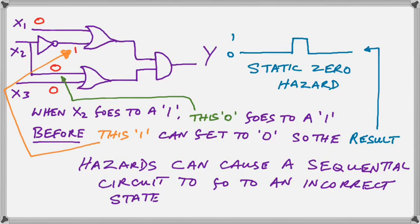And we get not only static 1 hazards, but we can get static 0 hazards as well. Study this diagram carefully, pause the video if necessary, to see how when we're working with 0s, we can get a static 0 hazard to occur.